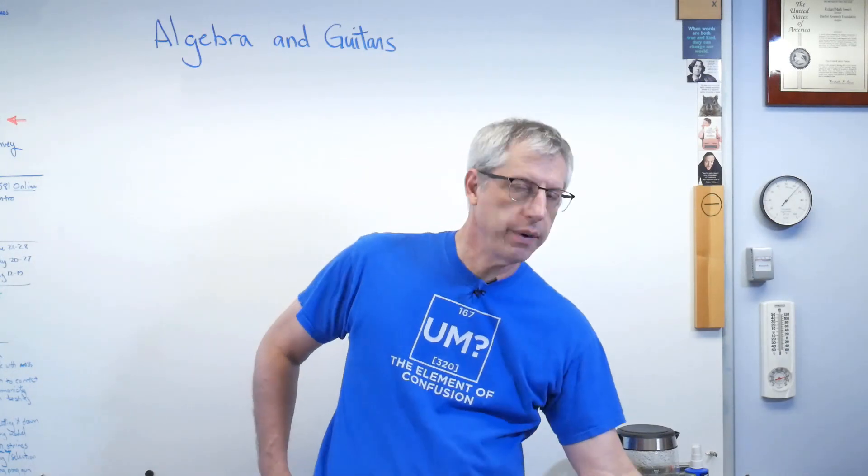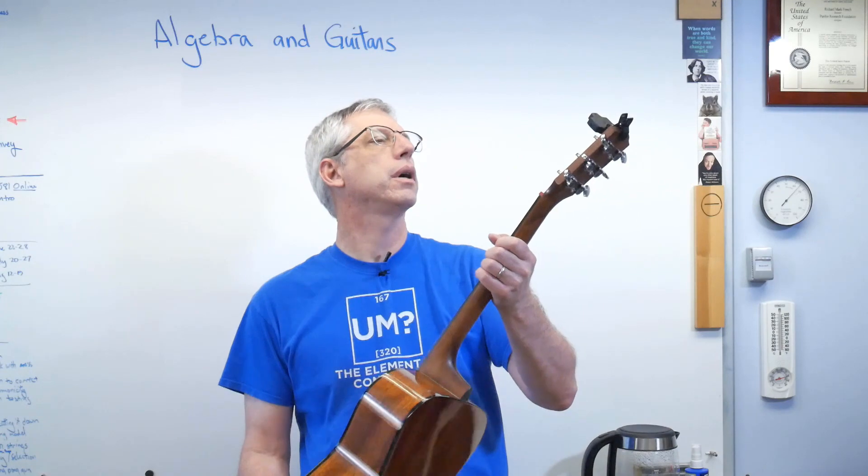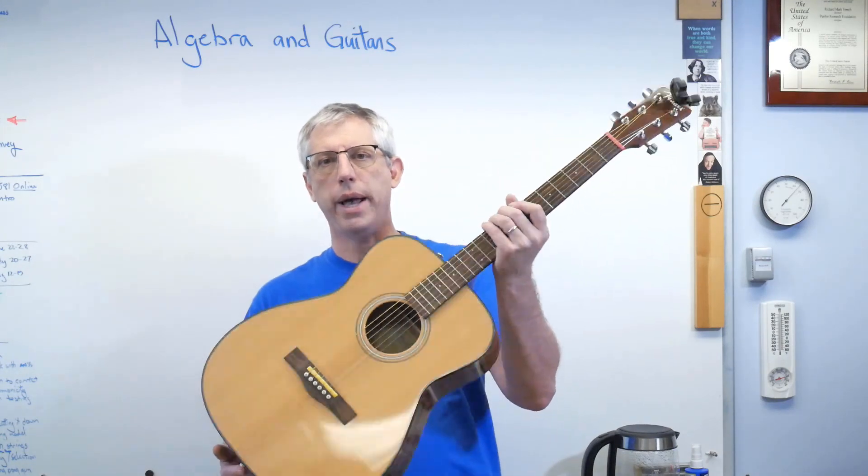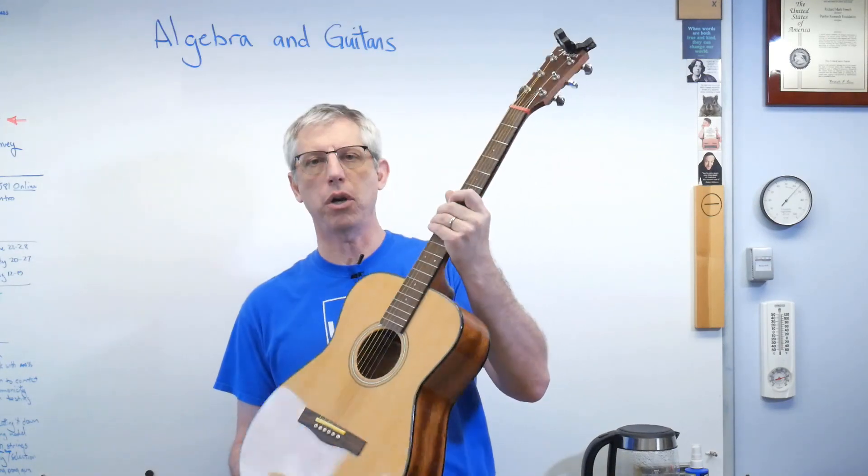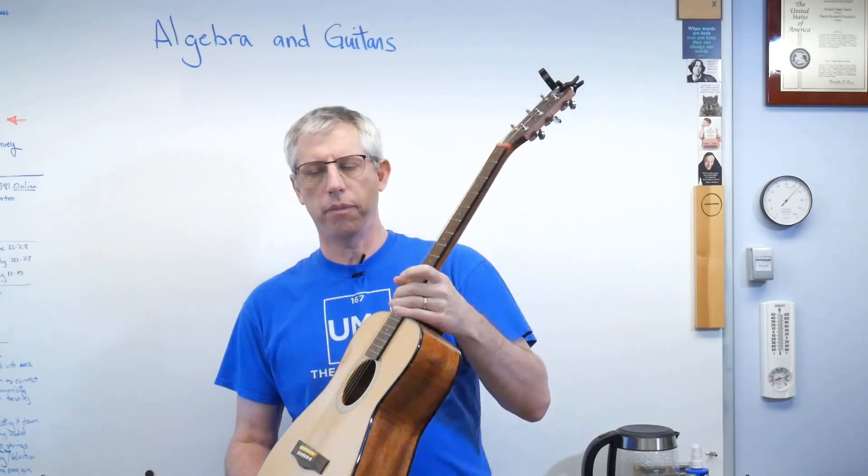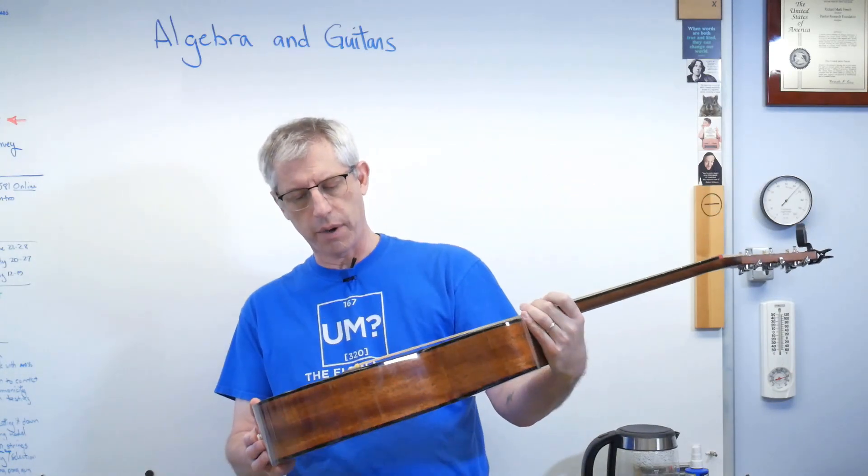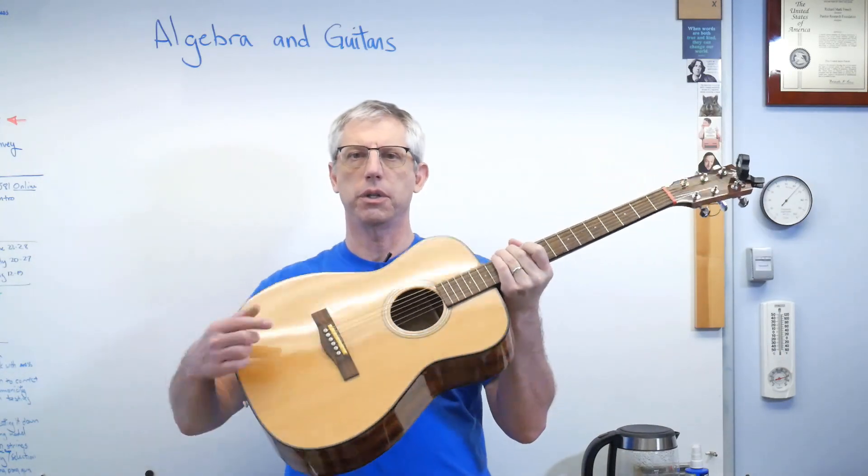So let's start with a guitar. I've got a Fender acoustic guitar here I bought a while back. It's an inexpensive guitar, but it's really pretty good for what it is. I've hot-rodded it a little bit. I've made some modifications. You see that yellow stuff there? That's me.